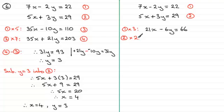Next we're going to multiply equation 2 by 2. So we've got 2 times 5x which is 10x, 2 times plus 3y which is going to be plus 6y, and then 2 times the 29 which is going to be 58. And we just number these new equations 3 and 4.